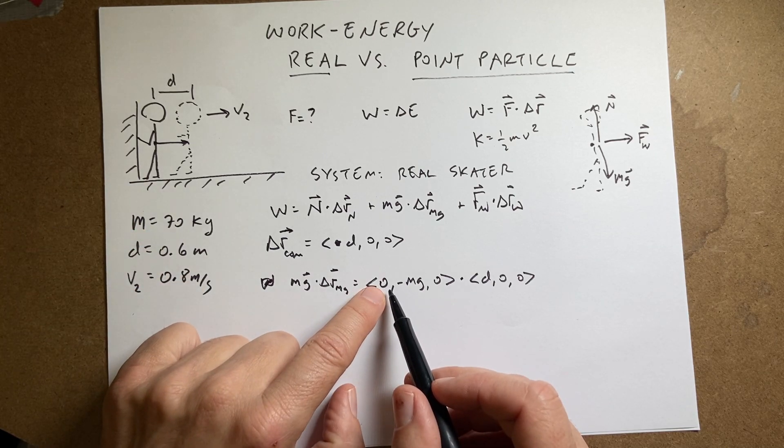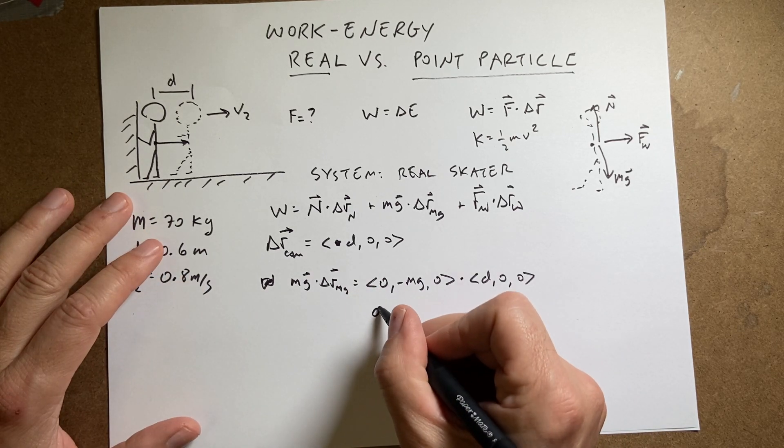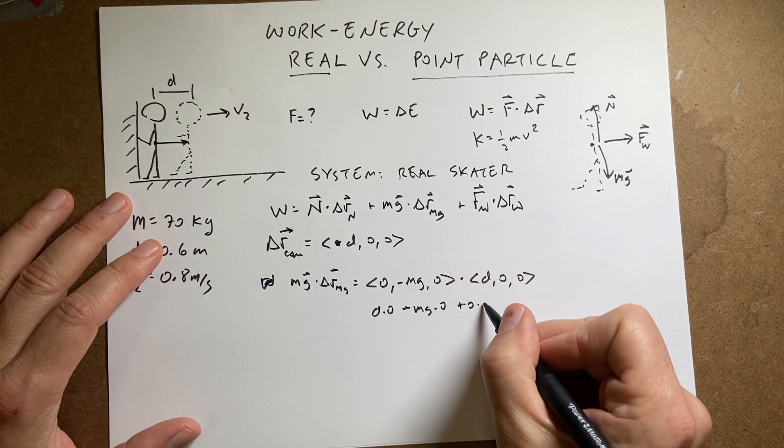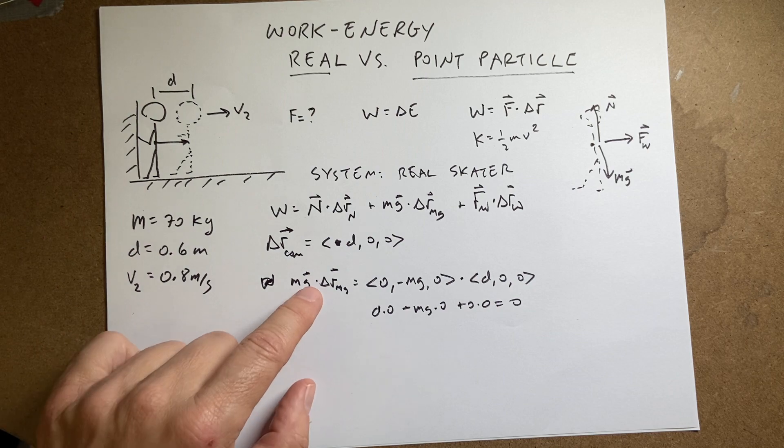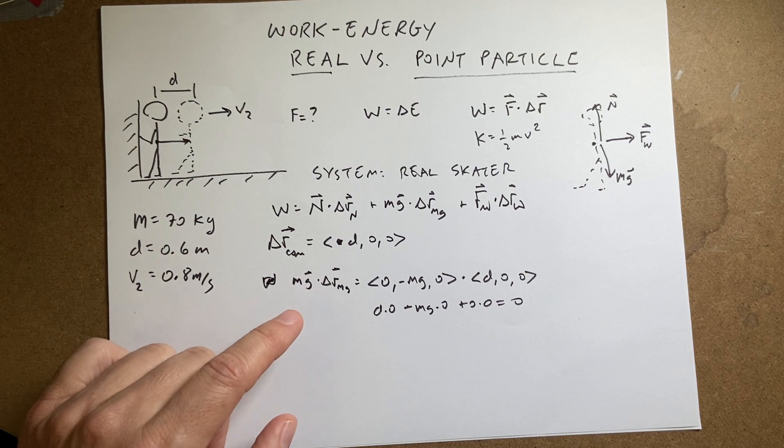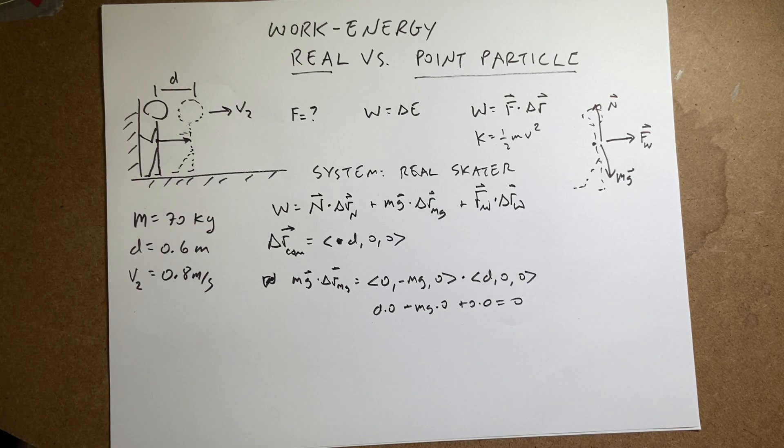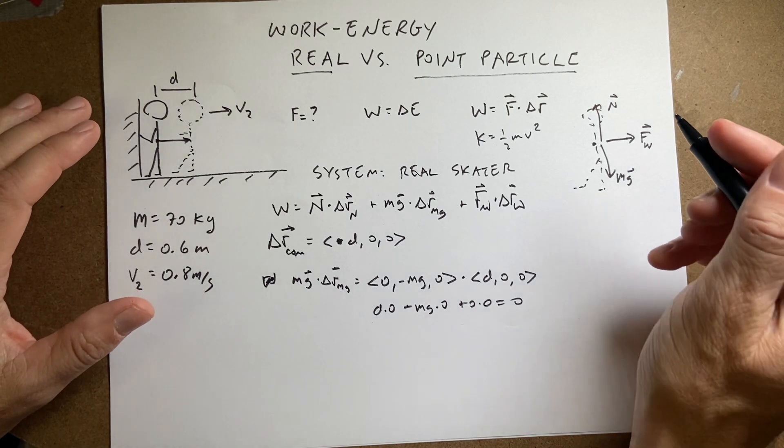In the dot product, I take the x components multiplied by each other. I have d times zero minus mg times zero plus zero times zero equals zero. There's no work done by that. You can also say the gravitational force is perpendicular to displacement. That's why there's no work done. I'm just trying to be thorough here. I'm just trying to cover all the bases.